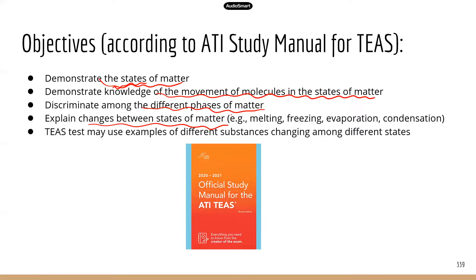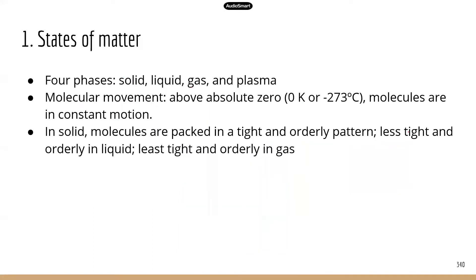We will differentiate between the different phases of matter and then look at the changes between states of matter. For example, melting — that's from solid to liquid — and freezing — that's from liquid to solid. We'll look at what happens to heat and energy when matter transitions from one state to another.